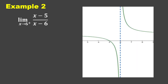Let us check using its graph. We have a vertical asymptote at x equals 6. From the right of 6, as x gets closer and closer to 6, f of x increases without bound — that is positive infinity.